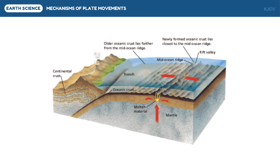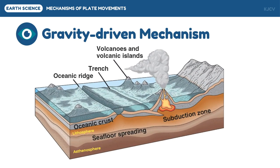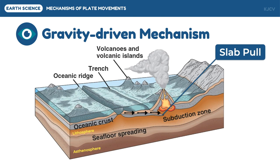Let us now discuss the driving mechanisms of plate movements. The first mechanism is a gravity-driven mechanism. The crust which spreads from the ridge travels to the trench or subduction zone. Gravity is said to be responsible for pulling the crust from the ridge — this feature is called slab pull. As the crust reaches a subduction zone, it partially melts and rises to the crust above it as magma, forming volcanoes and volcanic islands. The underlying crust is also pushed out of the ridge, a feature called ridge push.